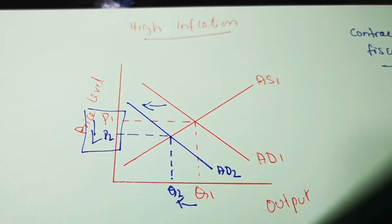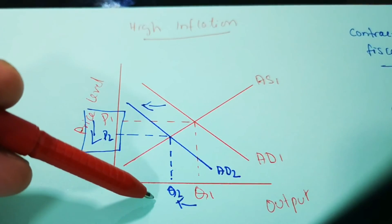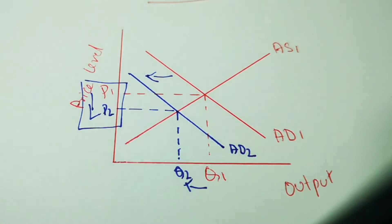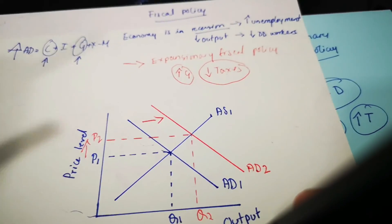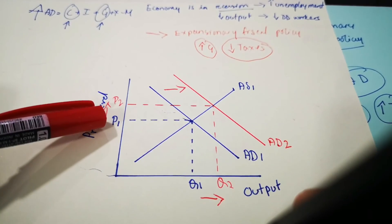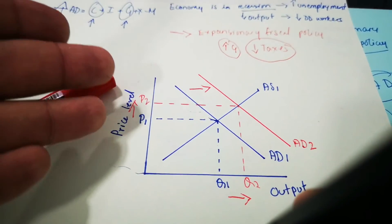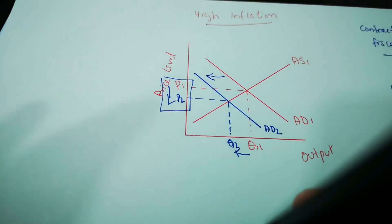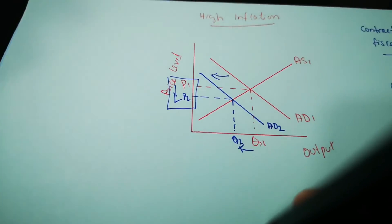Now in both situations there is a policy conflict. As the government tries to reduce inflation it also reduces output — the price level might go down, but at the expense of reduced economic growth, and that may also cause unemployment. Looking at the previous scenario, the government tried to solve recession and unemployment by boosting aggregate demand, so output increased — but the downside was the price level also rose, creating inflation. So there are policy conflicts, and due to these policy conflicts governments need to use a combination of policies, which we will learn in coming lessons.